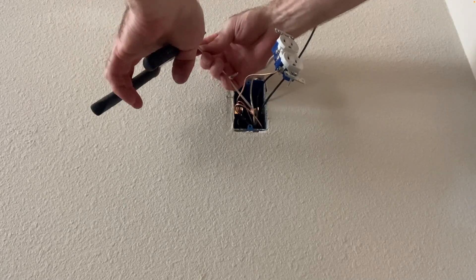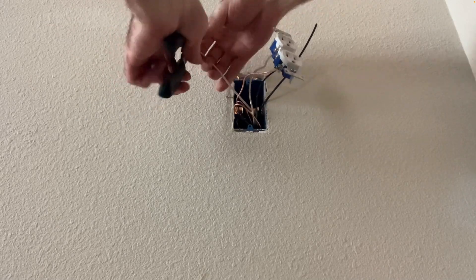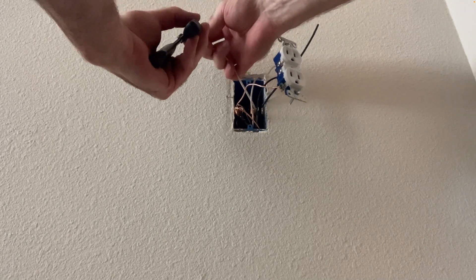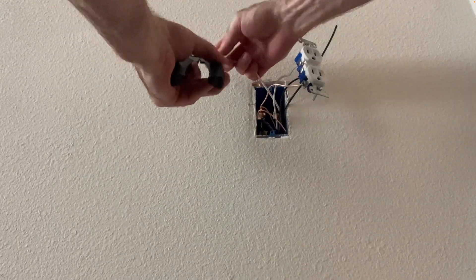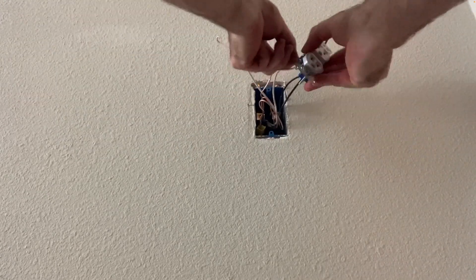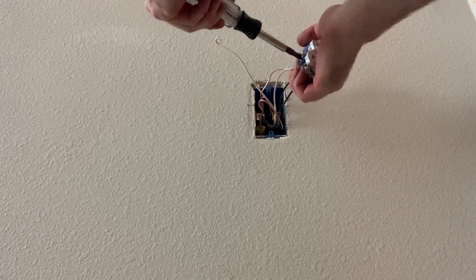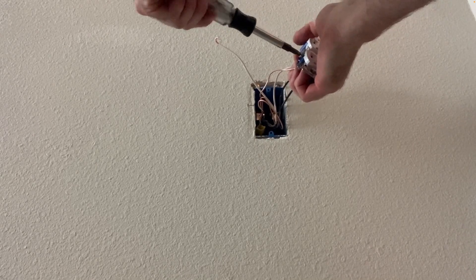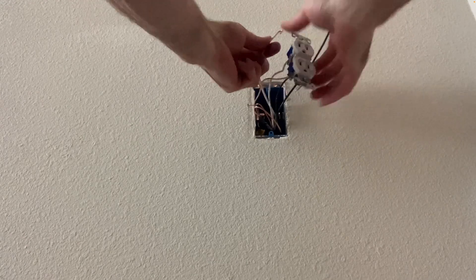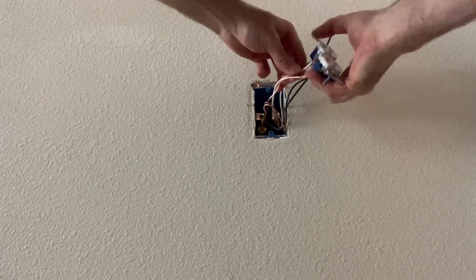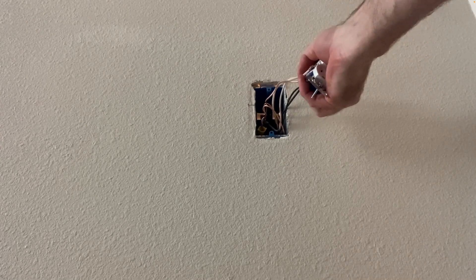We'll prep our neutral wire and our hot black wire. Now, these outlets have backstab connections—I don't recommend using those. I recommend using the screw terminals. It's a much more solid connection. The screw terminals are safer than just doing the backstab. That's why you'll note here I'm using the screw terminals.